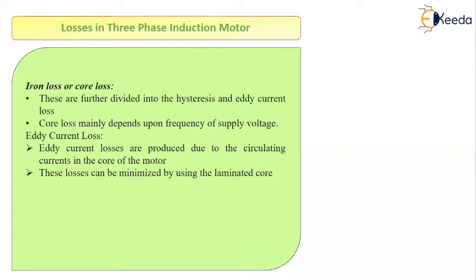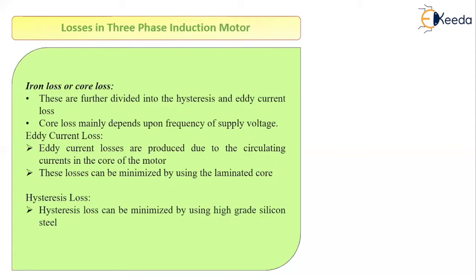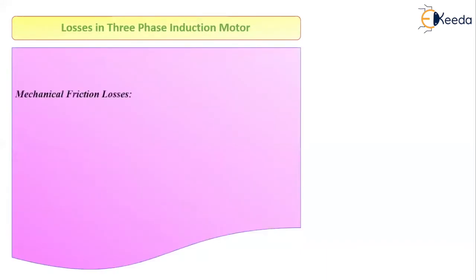Eddy current losses can be minimized by using a laminated core. Hysteresis loss can be minimized by using high-grade silicon steel. The material used while making the induction motor plays a very important role in the overall performance of the motor — the better the material, the better the performance. So to reduce hysteresis loss, we must use high-grade silicon steel. This concludes the discussion on iron or core loss.